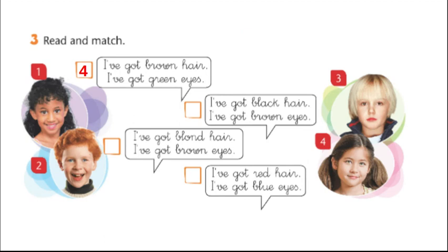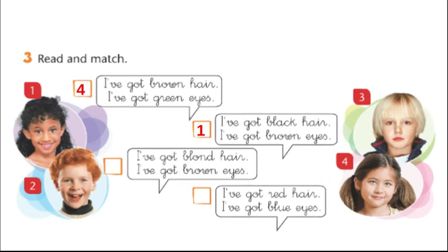Okay, I'm going to read the next one: I've got black hair. I've got brown eyes. Does the girl in picture number one have black hair? Yes, she does. Good job. Now we have to check the color of her eyes. Does she have brown eyes? Yes, she does. So we know that she's a match. We write number one in that box for: I've got black hair. I've got brown eyes.